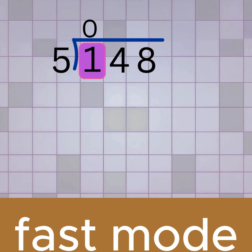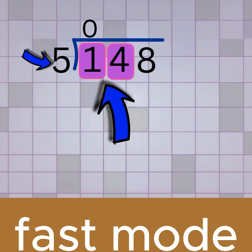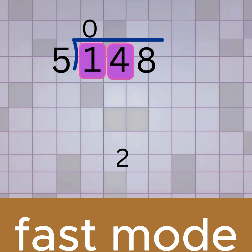Then we move to the next digit, which is 4, working with 14. We ask, how many times does 5 go into 14? It goes 2 times, because 5 times 2 is 10. We write 2 on top, above the 4.